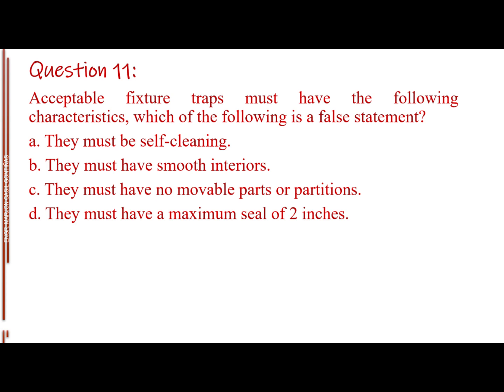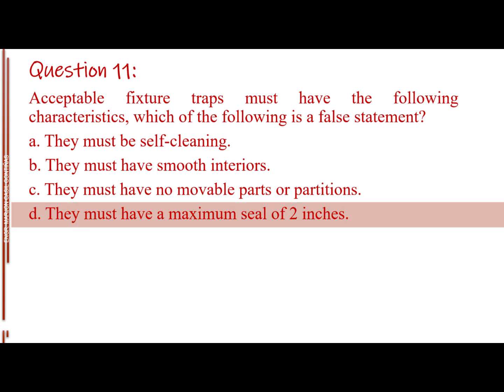Question number 11. Acceptable fixture traps must have the following characteristics — which of the following is a false statement? Letter A, they must be self-cleaning. Letter B, they must have smooth interiors. Letter C, they must have no movable parts or partitions. Letter D, they must have a maximum seal of 2 inches. The answer is Letter D — it should have a minimum seal of 2 inches.